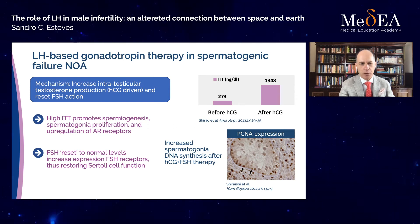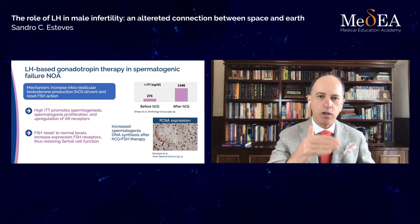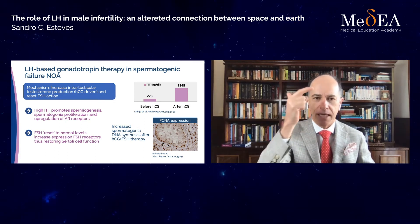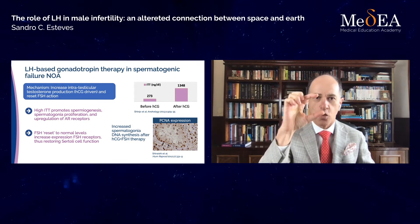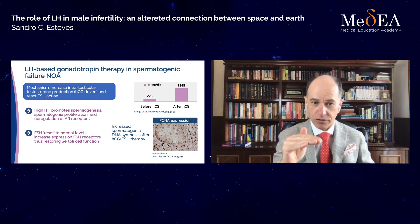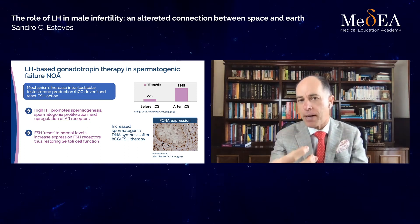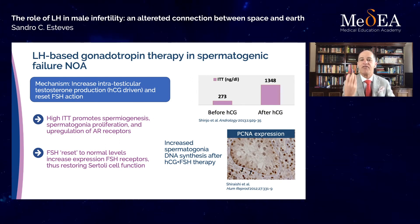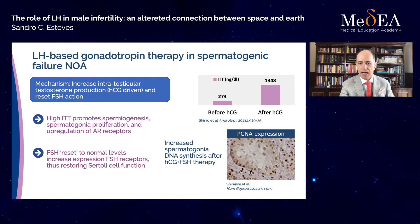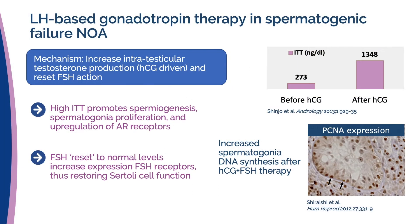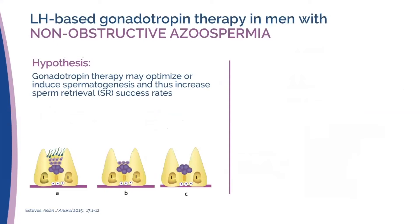Another important effect of HCG is that we reset FSH: by giving HCG and increasing testosterone production, there will be inhibition at the pituitary level and FSH levels — which are usually high — will go down to normal levels. This is important because the down-regulated receptors will start to re-emerge, promoting a better environment for the Sertoli cells to support spermatogenesis. Studies have also shown that HCG plus FSH therapy can increase spermatogonia DNA synthesis in men with non-obstructive azoospermia.